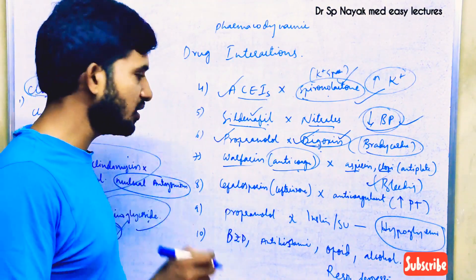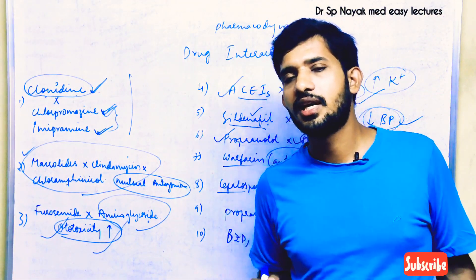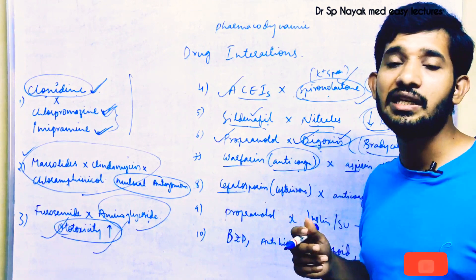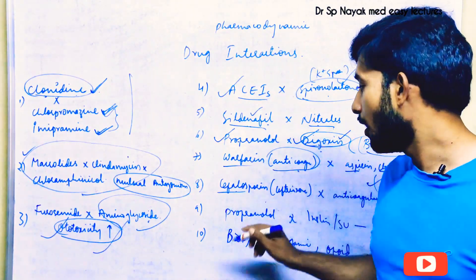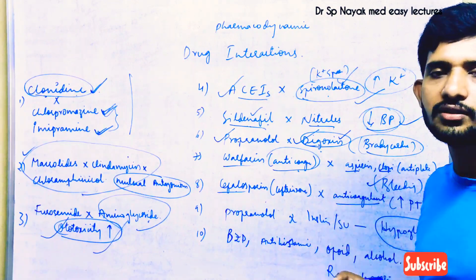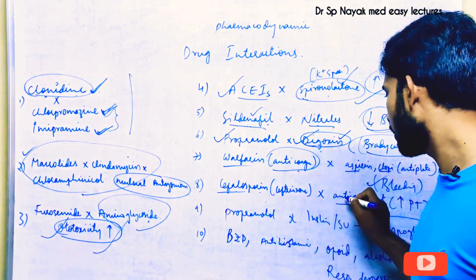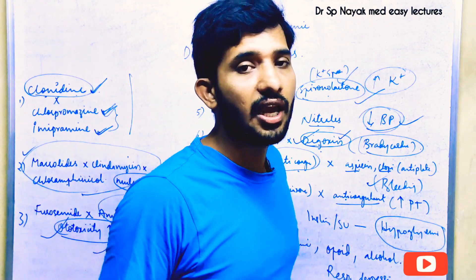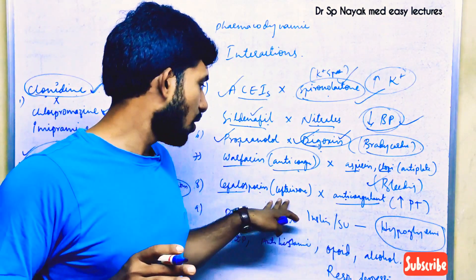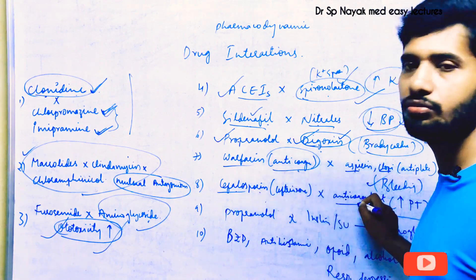Cephalosporins cause bleeding because they increase prothrombin time. Anticoagulants also increase prothrombin time. So when cephalosporins and anticoagulants are given together, prothrombin time is further increased and the patient faces a high risk of developing bleeding. This combination is also a very dangerous one — do not combine these two drugs.